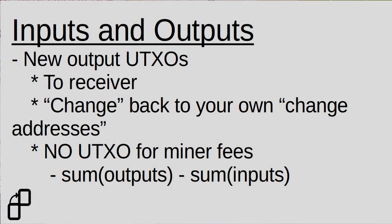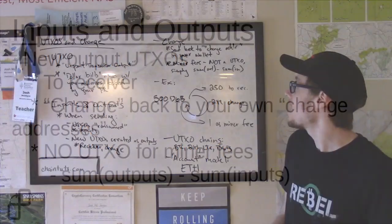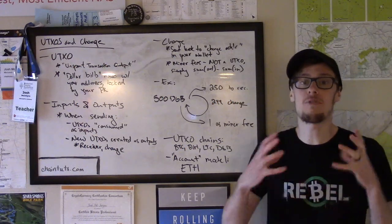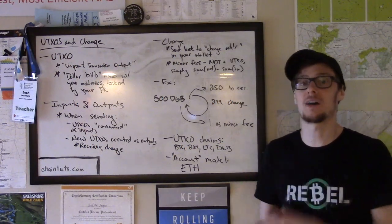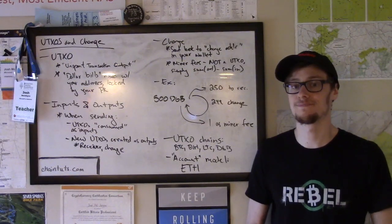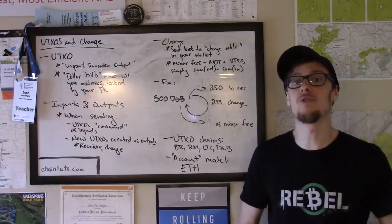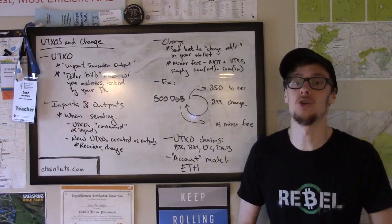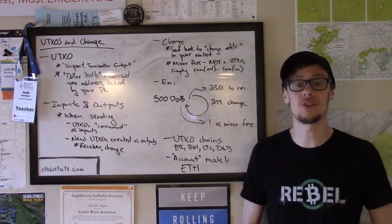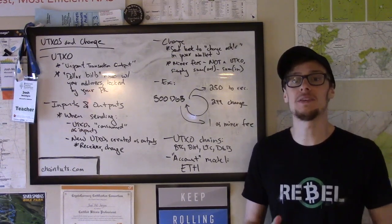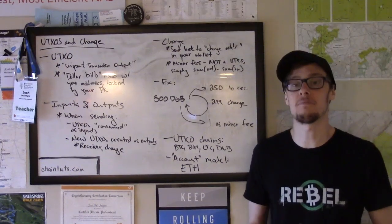Miner fees are not UTXOs, and that's another interesting concept you may not understand if you're looking at this on a block explorer for the first time. Rather, miner fees are simply the sum of all the inputs minus the sum of all the outputs. So whatever is left over that is not specified as a new UTXO in the transaction is going to be sent to the miners as a mining fee.